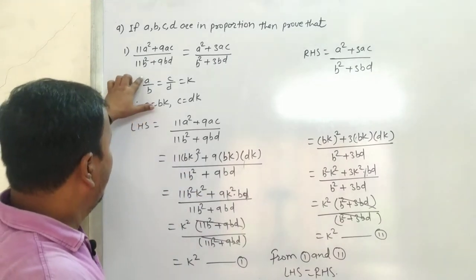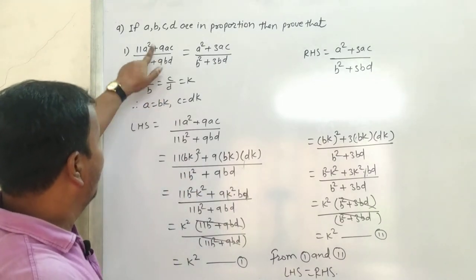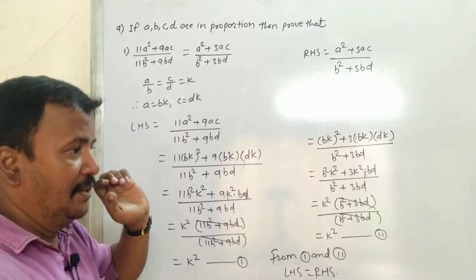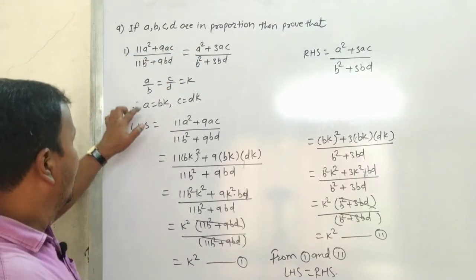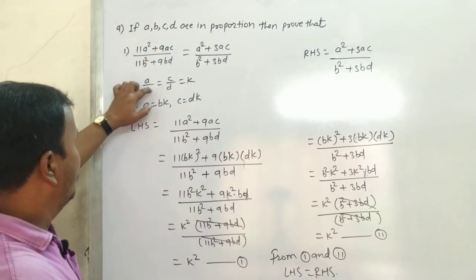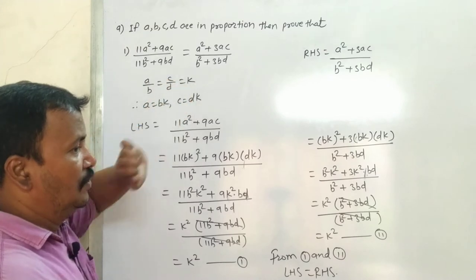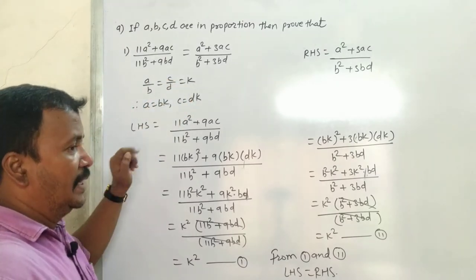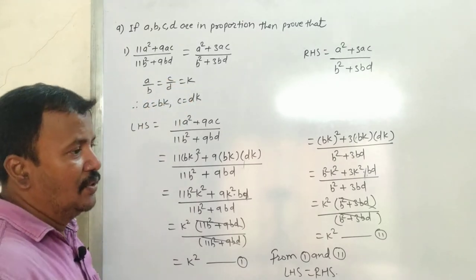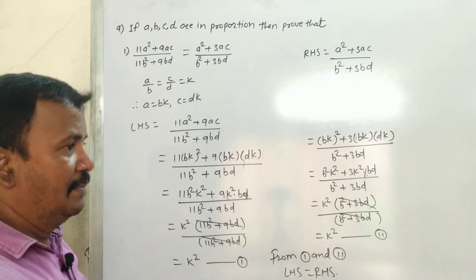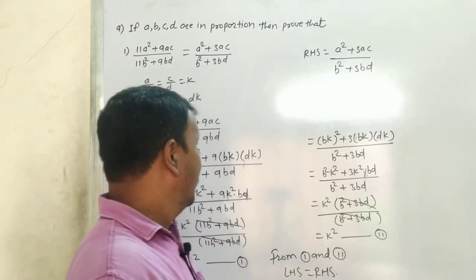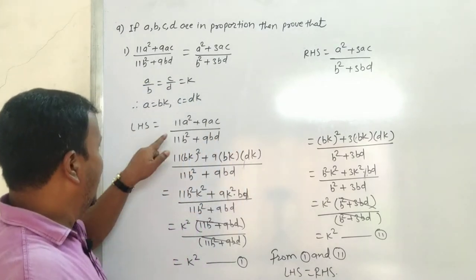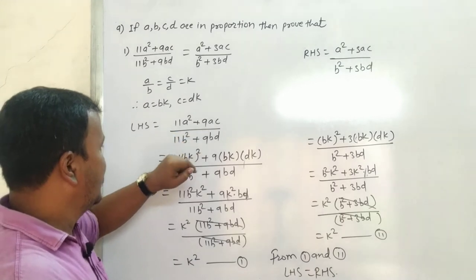Since a, b, c, d are in proportion, a/b = c/d = k. So a = bk and c = dk. Now let's find what the LHS is: (11a² + 9ac) / (11b² + 9bd).